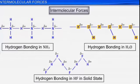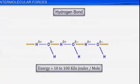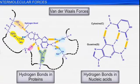Now, if someone asks which intermolecular force is stronger — hydrogen bonding or Van der Waals forces — always remember: hydrogen bonding is stronger than Van der Waals forces. This is because the hydrogen bond interaction energy is 10 to 100 kJ per mole. Hydrogen bonding is seen in important molecules like proteins and nucleic acids.